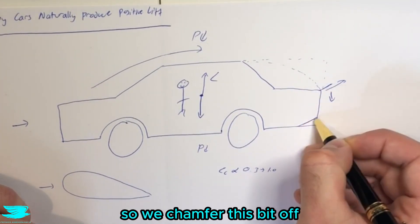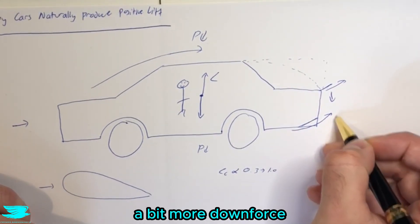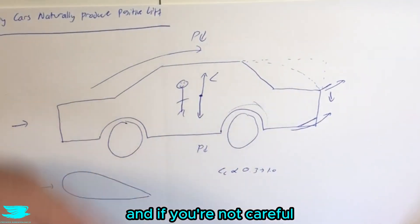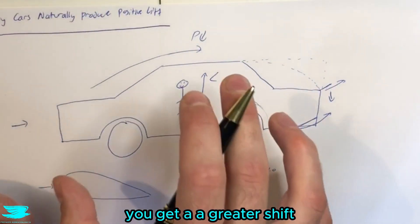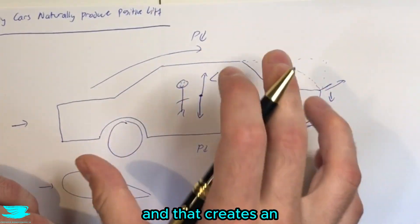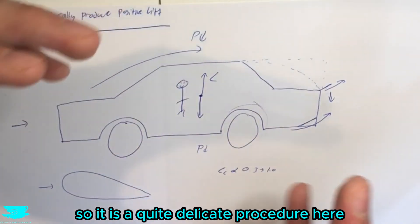So if we kick the diffuser up, we chamfer this bit off, the flow comes up and kicks up and we can produce a bit more downforce. That also results in a lot more force being put on the rear wheels. And if you're not careful, you get a greater shift, stability in the rear wheels, and that creates an instability in the car. So it is a quite delicate procedure here.